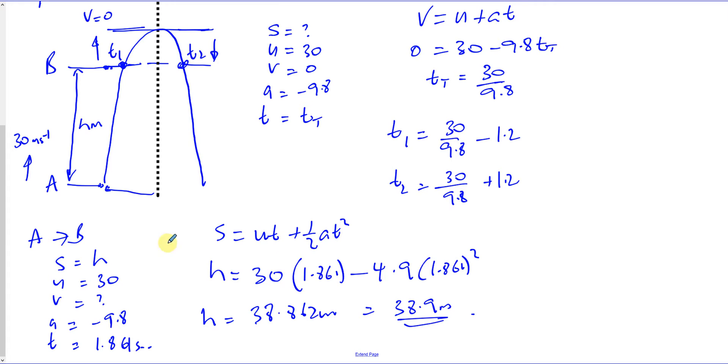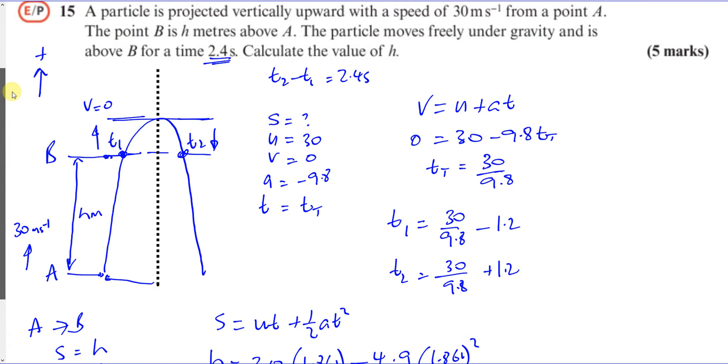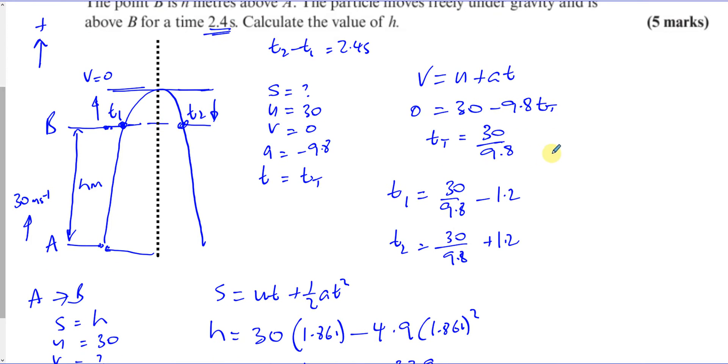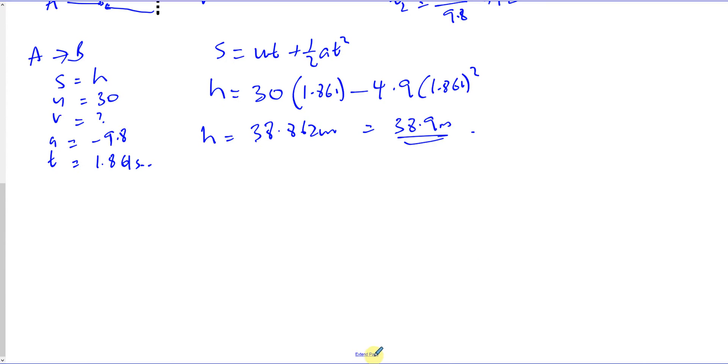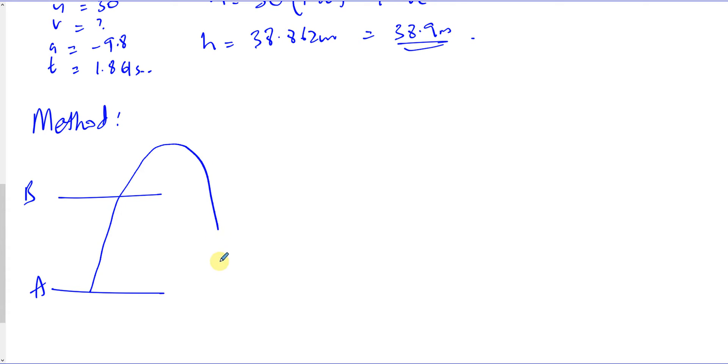We could have also answered it in an alternative way, which would have been as follows, which I'll explain. Another method we could use, method 2. What we could do is we could say, this is A and this is B, just as before. It's gone above B and then back down again.